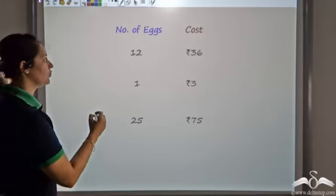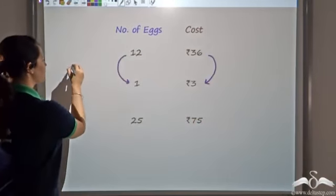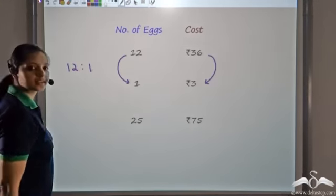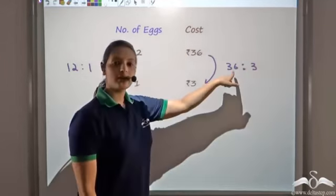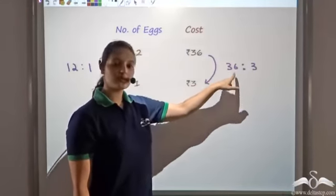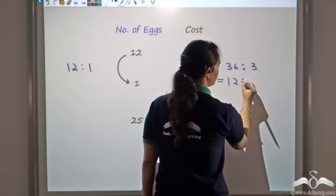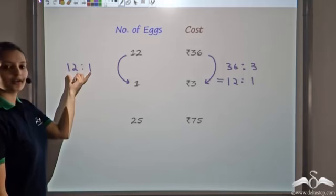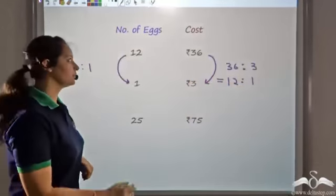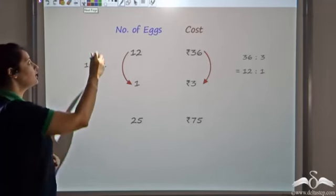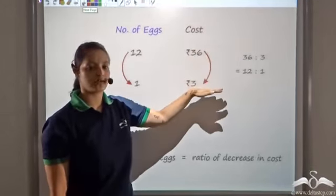Now let's look at the ratio of decrease in the number of eggs and the decrease in cost. The ratio of decrease in eggs is 12 to 1. And the ratio of decrease in cost is 36 to 3. There is a common factor of 3, so dividing both terms by 3 gives 12 to 1. So the ratio of decrease in number of eggs equals the ratio of decrease in cost — both are 12 to 1.